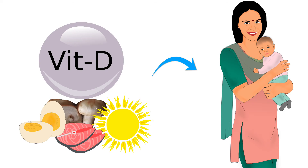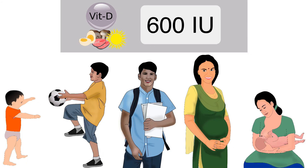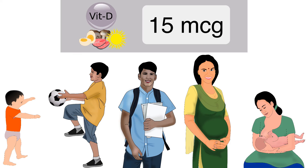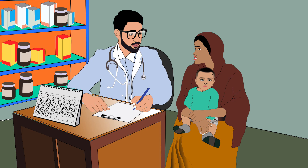To avoid deficiency, getting adequate vitamin D is important. For infants of 0–12 months, 400 international units or 10 micrograms per day is recommended. For people aged 1 to 70 years — including children, adolescents, adults, and pregnant and lactating mothers — 600 international units or 15 micrograms per day is recommended. For men and women above 70 years, 800 international units or 20 micrograms is recommended. Many experts recommend much higher doses.